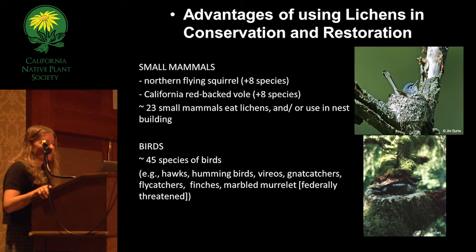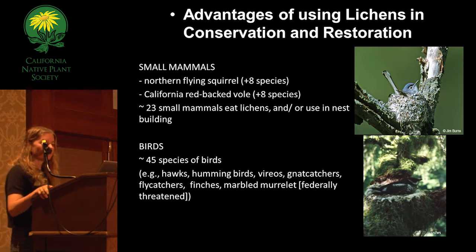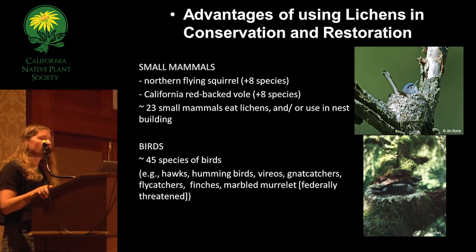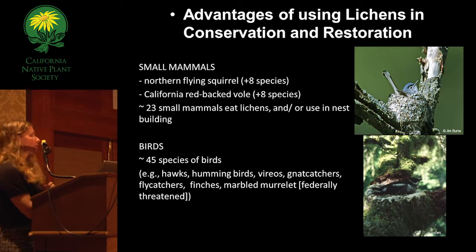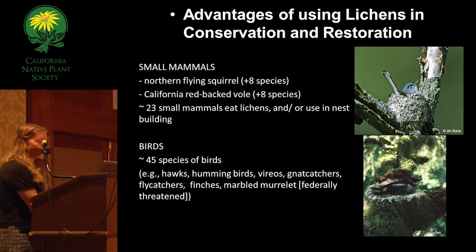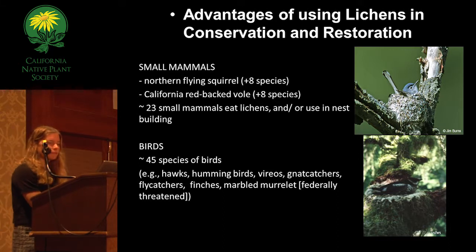They've all been reported as eating lichens. Also, small mammals — the northern flying squirrel has been documented using over eight lichen species, and 23 different small mammals eat lichens or use them to nest. Particularly important from a conservation perspective are bird species. Over 45 different species of birds use lichens to build their nests, including the blue-gray gnatcatcher, whose nest is entirely built of lichens, and the federally listed marbled murrelet, which also uses lichens to build its nest. Other birds include hawks, hummingbirds, vireos, and flycatchers.